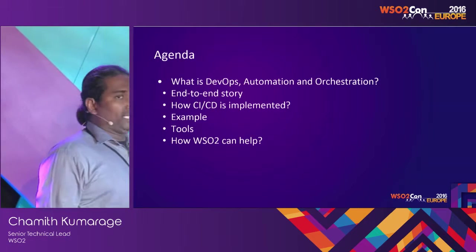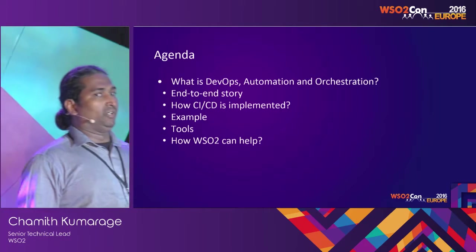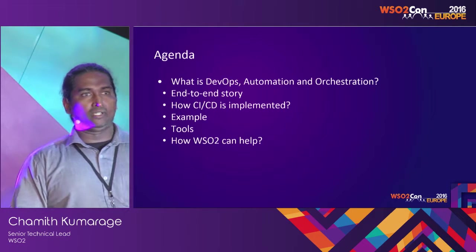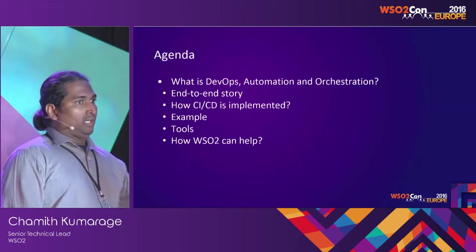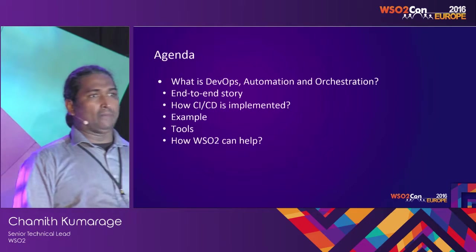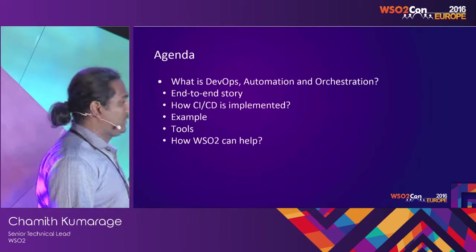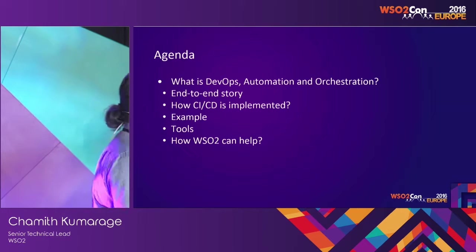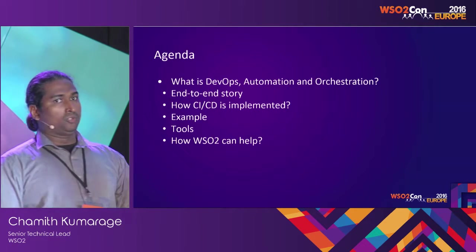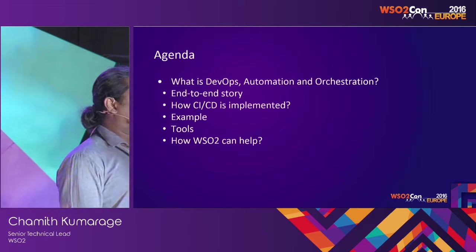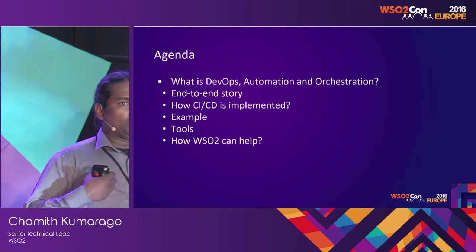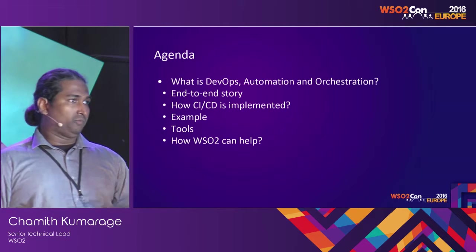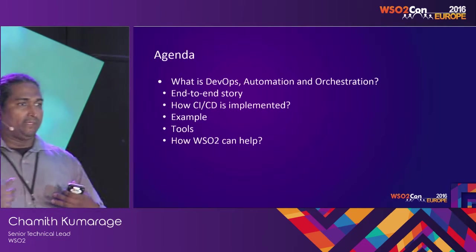I will be talking about DevOps and automation and orchestration aspects of DevOps. Then I will briefly describe what things you have to consider when building an automation and orchestration platform in your organization, and how that process happens at a high level. We will discuss the CI/CD process and how it is implemented, walk through some examples and tools, and finally describe how WSO2 can help you build your own infrastructure for automation and orchestration and provide that as a service.